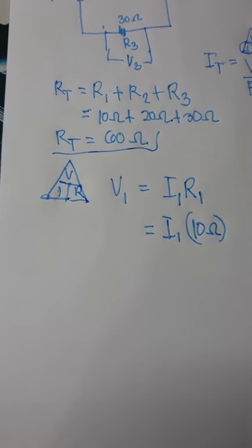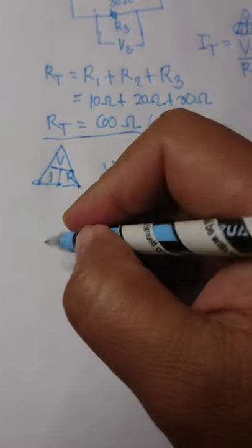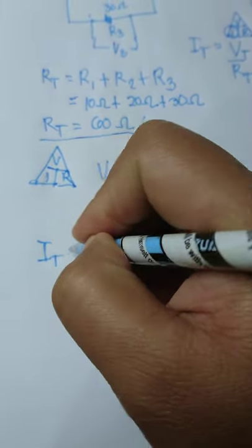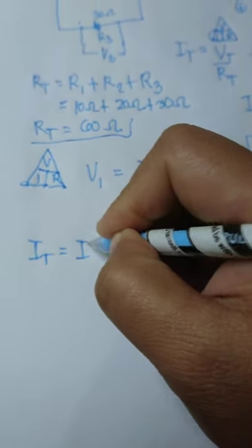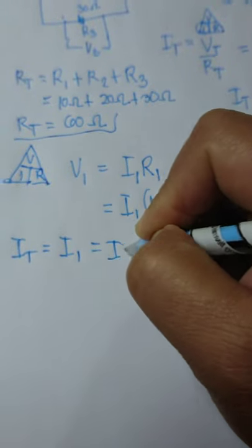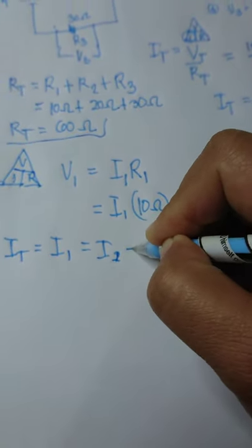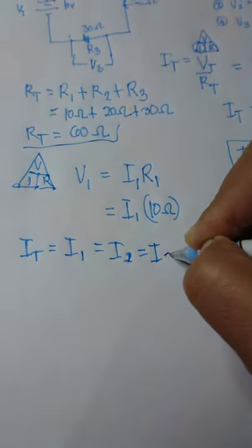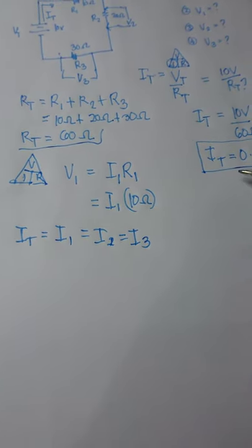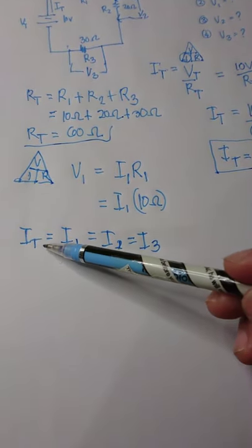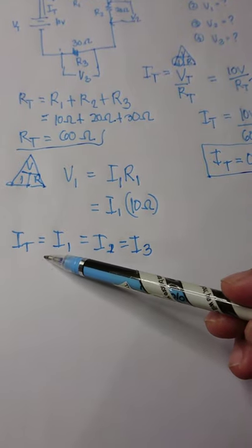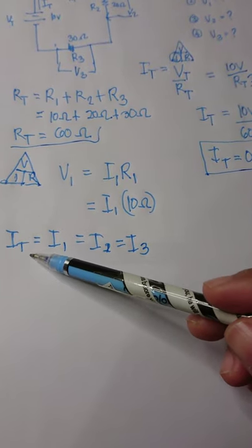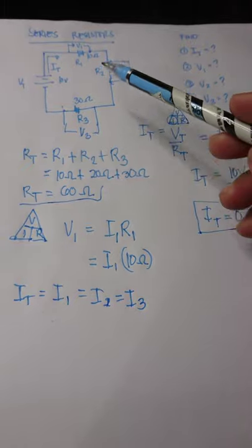But if you remember, there is a rule in series that the total current is equal or the same as the individual current that is flowing in a series circuit. We already got the total current. So therefore, following the rule, we have I total is equal also to I1,